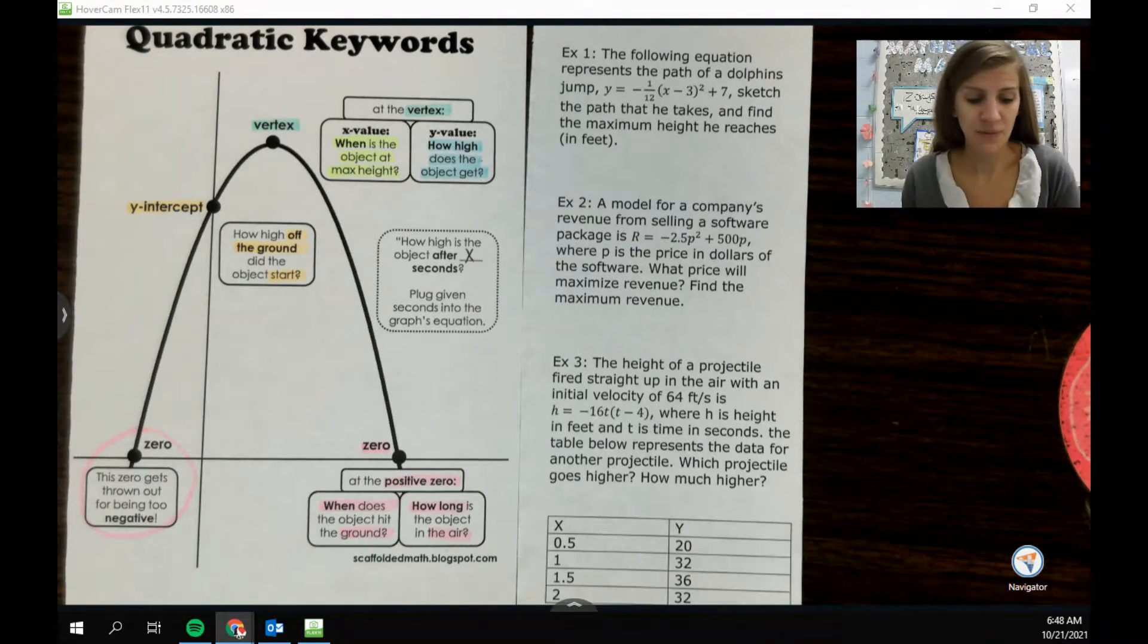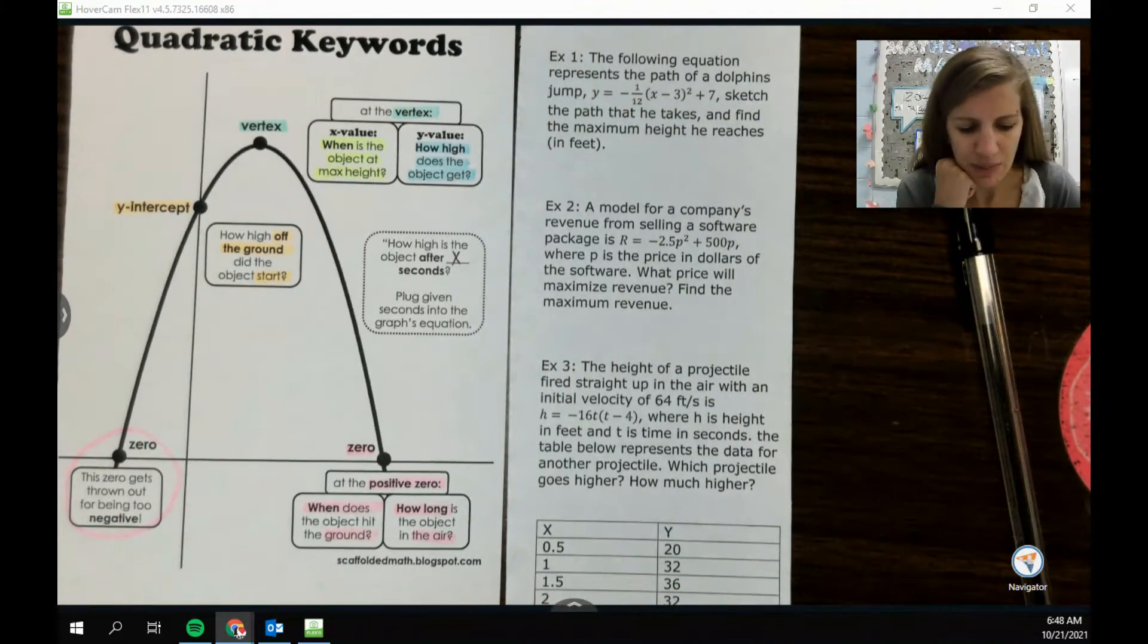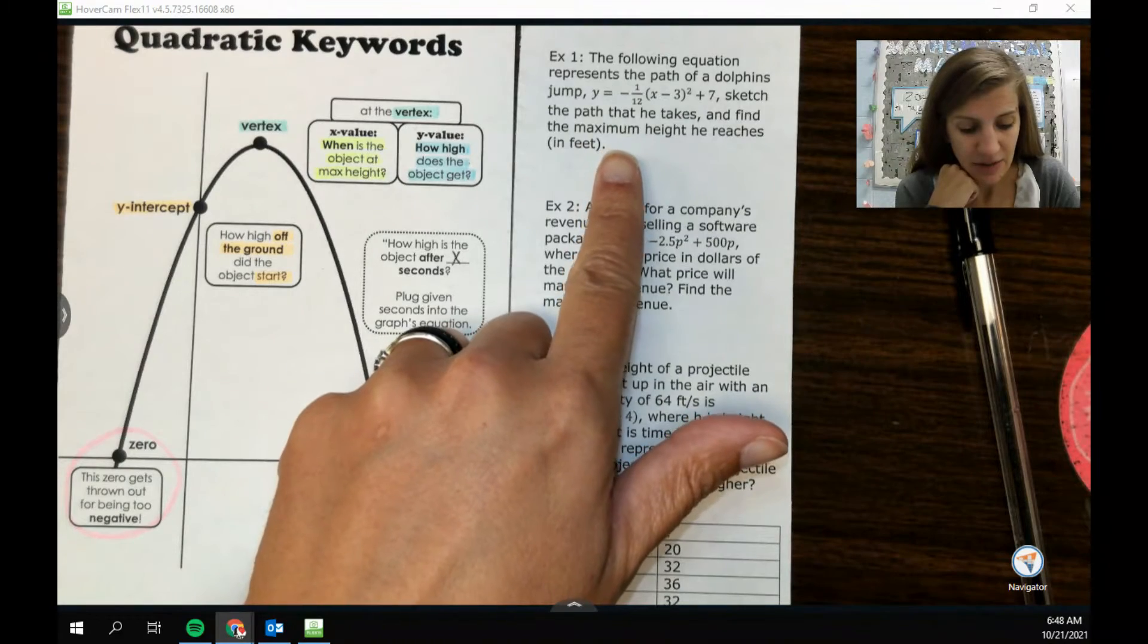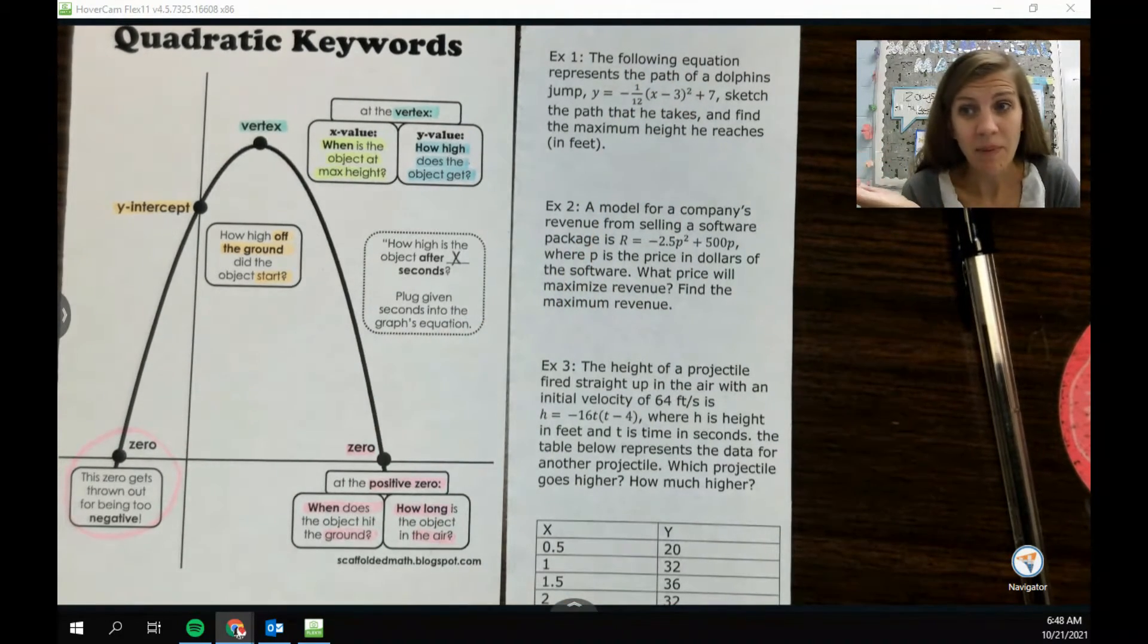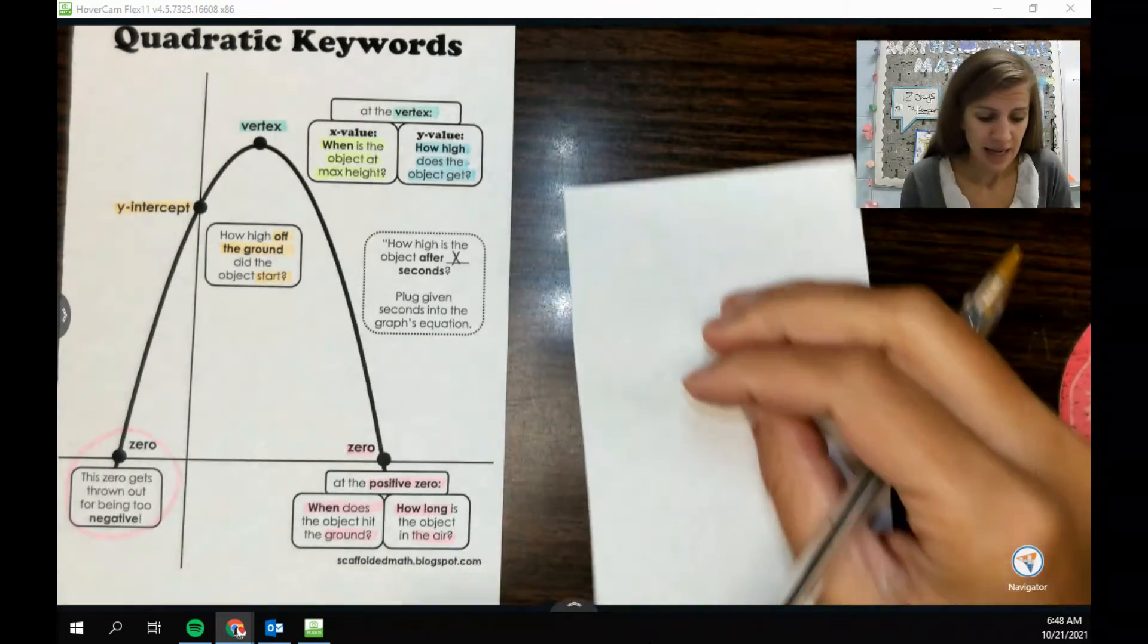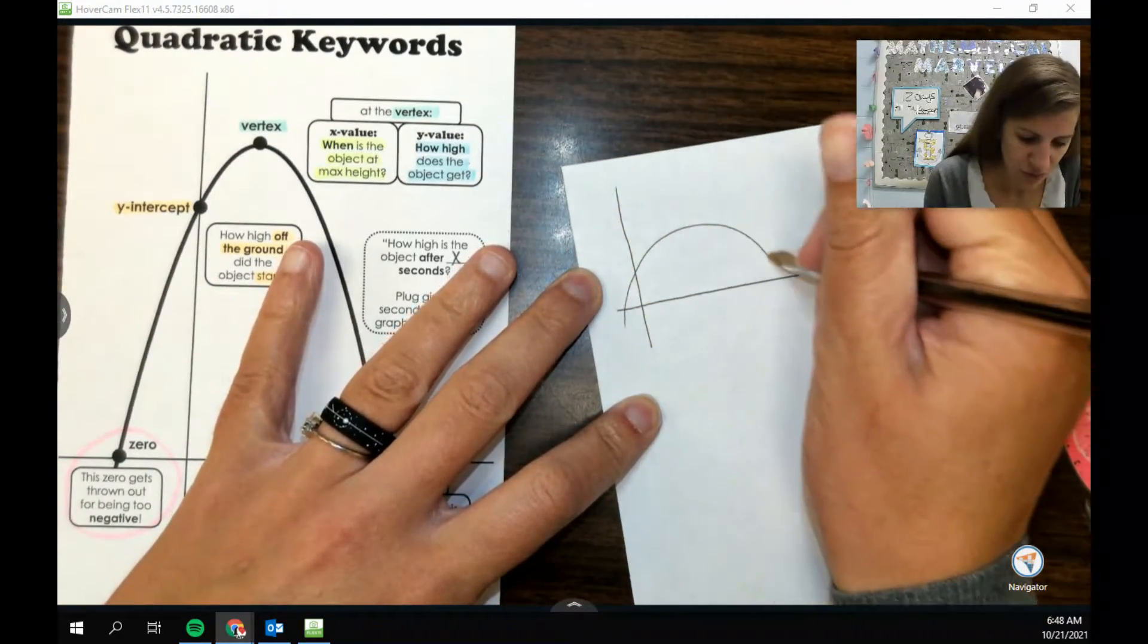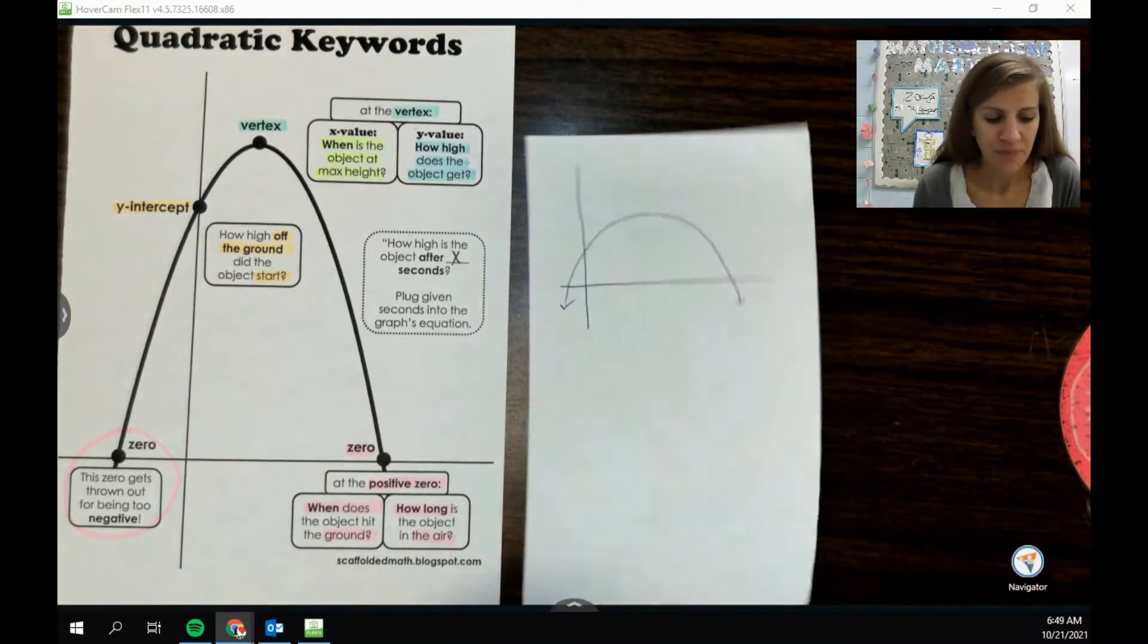That could also happen, but knowing what we know about how to graph should make these questions pretty easy to answer usually. So let's try a couple. Example one here, the following equation represents the path of a dolphin's jump. Sketch the path that he takes and find the maximum height that he reaches. If I think about a dolphin jumping I feel like I can see that path. So if I flip this over and kind of draw this one out, and again it's just a sketch, doesn't have to be perfect.